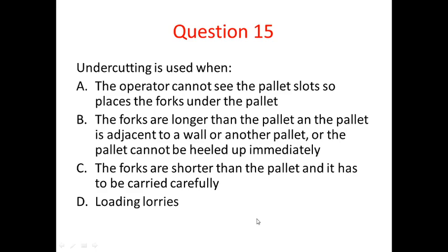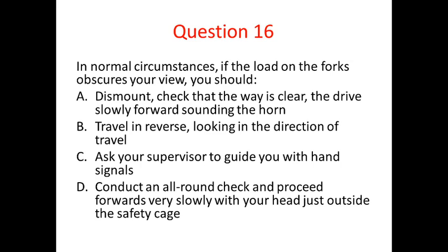Undercutting: this is when the load is not carried all the way up to the heel of the fork. You would use this if the forks are longer than the pallet and the pallet is adjacent to a wall, or the pallet can't be heeled up immediately. For example, if you're going onto the back of a wagon and trying to remove a load that's adjacent to another load, going all the way through would skewer the load behind it. In that case, undercut the load as little as possible, lift it, pull it back by reversing, then lower it down as soon as possible and fully heel it up.